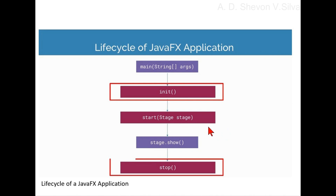Four, call the start(javafx.stage.Stage) method. Five, wait for the application to finish, which happens when either of the following occur: the application calls Platform.exit(), or the last window has been closed and the implicit exit attribute on Platform is true. Six, call the stop method.